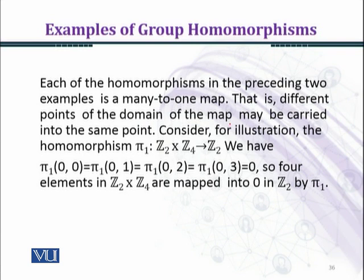Consider for illustration the homomorphism π₁ from Z₂ × Z₄ to Z₂, the first projection. Z₂ × Z₄ is a group under addition with total 8 elements: (0,0), (0,1), (0,2), (0,3), (1,0), (1,1), (1,2), (1,3) as ordered pairs. In Z₂, the additive group under addition, we have just 2 elements: 0 and 1.